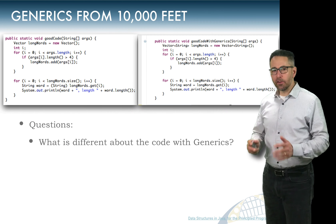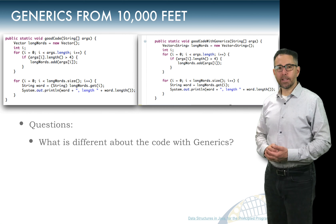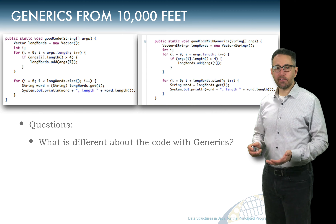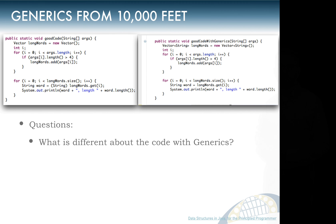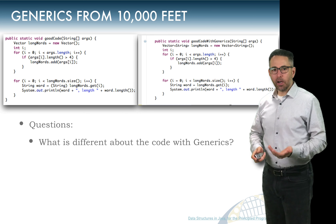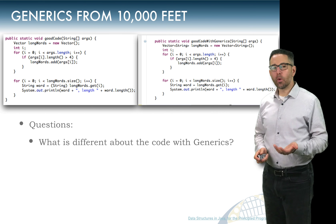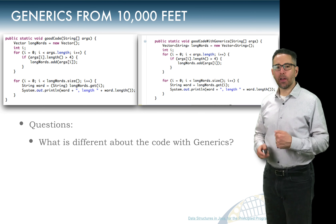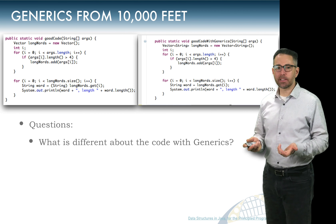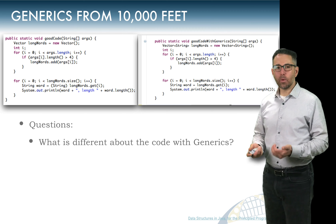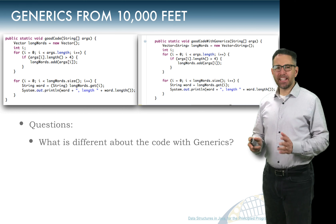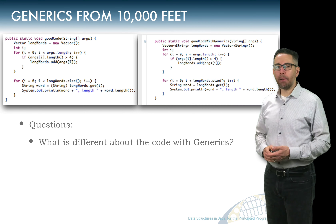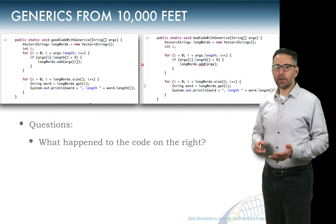Let's take another look at this code implemented with generics and see what's different. I'll give you a second to pause the video and analyze the two code segments. What did you notice? When we decided to add a word to our long-words Vector, we could do it with the exact same code on both sides — it wasn't the add line that was different. But down at the bottom, when we retrieved elements from our list, we didn't have to cast. That lack of casting is what we saw in the first introduction to generics.